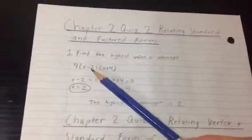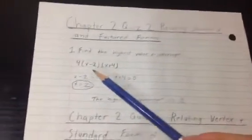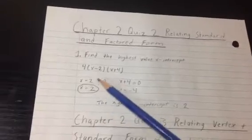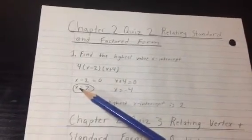So x-2 equals 0 and then you bring the 2 over and it becomes positive. So you know x equals 2.